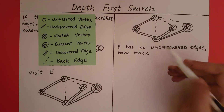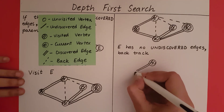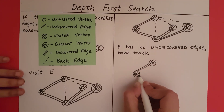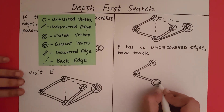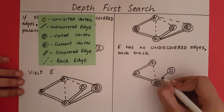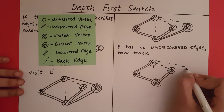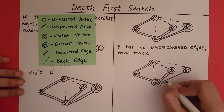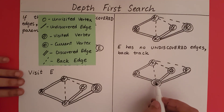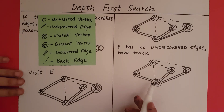So now I am going to go back to C. Now I come to C — C has no undiscovered edges. So what must I do? I need to backtrack. What was the parent of C? How did I come to C? I came through A to B. So I am going to backtrack to B.